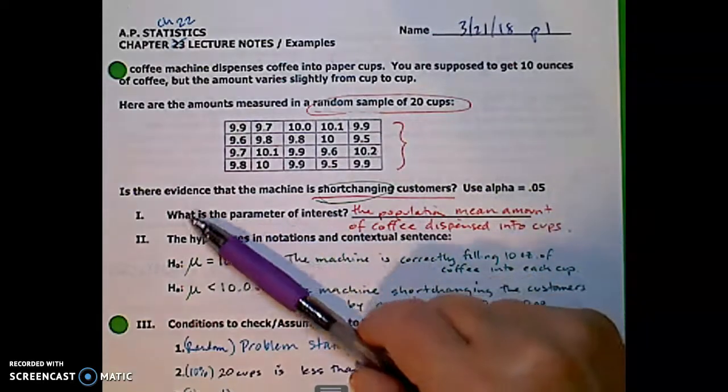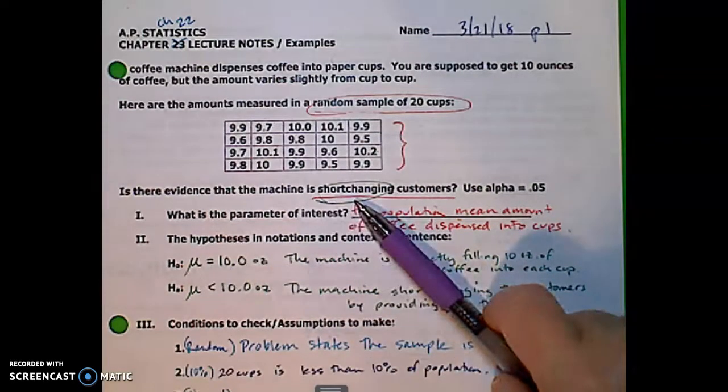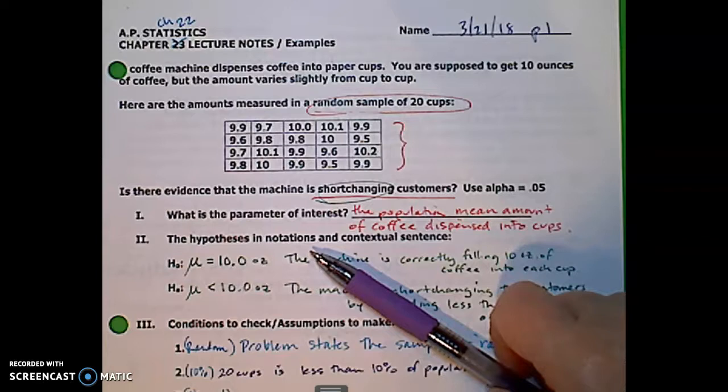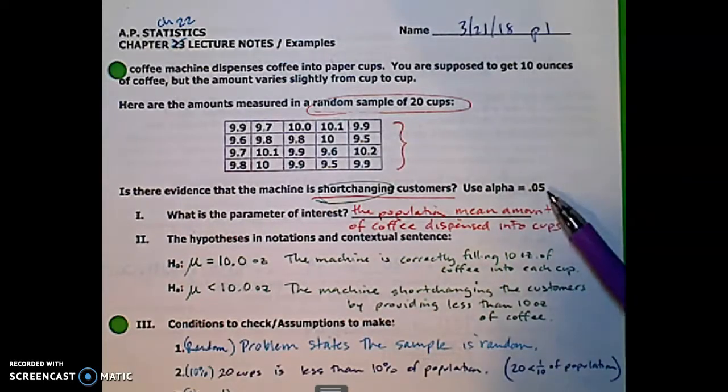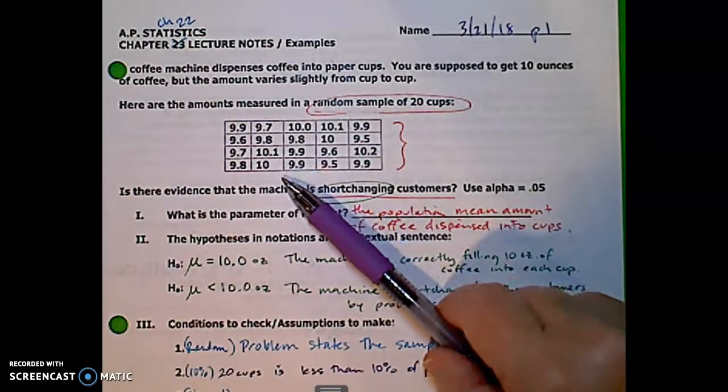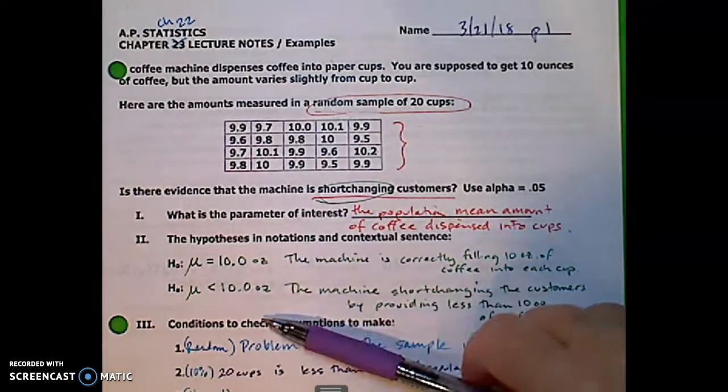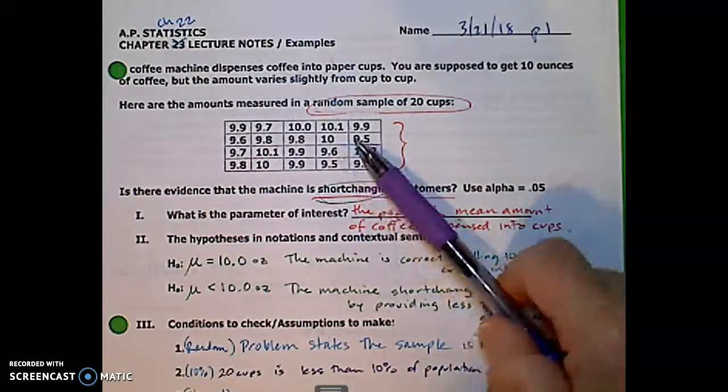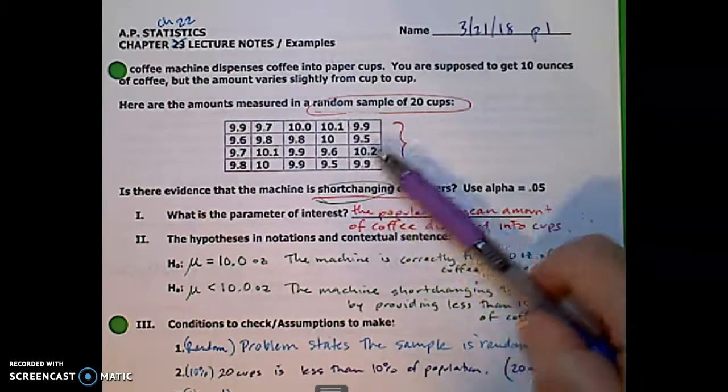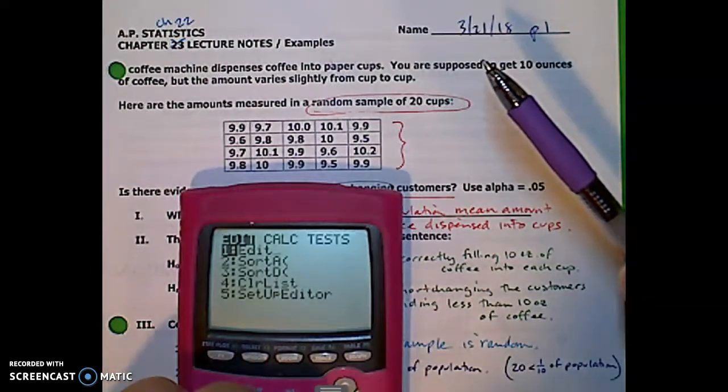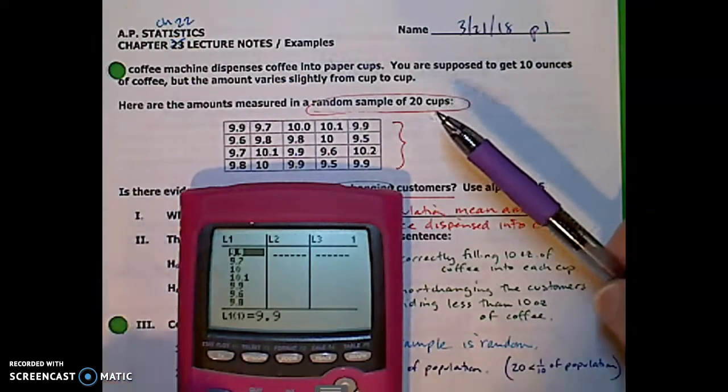Anyway you're supposed to get 10 ounces of coffee in your cup but obviously that amount varies slightly from cup to cup. So we measured the amount, the number of ounces of coffee in a random sample of 20 cups. And here are those values. Our question is, is there evidence that the machine is short changing customers? Are we getting less than 10 ounces of coffee per cup on average? We're going to use a significance level of 5%. If we just glance at the numbers, most of them are below 10, but is that enough to tell us that we're getting short changed? Obviously not. We want to put these into the calculator. So you could go ahead and stop the video and do that now. Just go stat edit. Put them in list 1 and you'll have 20 entries.